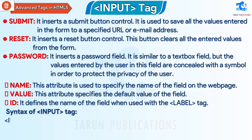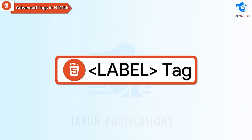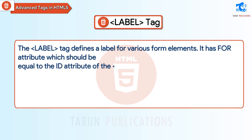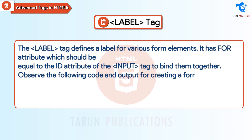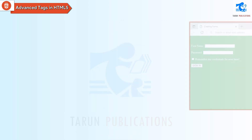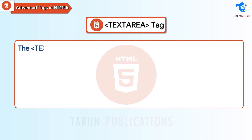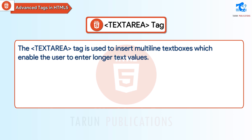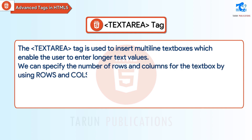Syntax of input tag: input attribute="value" id="value" name="value". Label tag: The label tag defines a label for various form elements. It has a for attribute which should be equal to the id attribute of the input tag to bind them together. Textarea tag: The textarea tag is used to insert multi-line text boxes which enable the user to enter longer text values. We can specify the number of rows and columns for the text box using the rows and cols attributes of this tag.